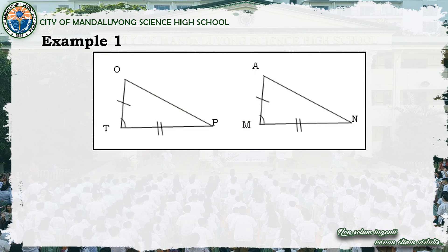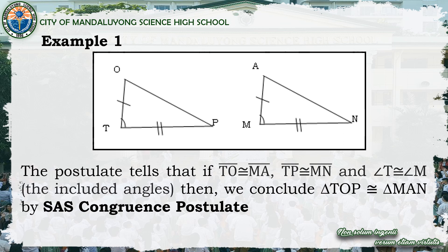Example number one: triangle TOP and triangle MAN. Based on the marks on the figure, if side TO is congruent to side MA, side TP is congruent to side MN, and angle T is congruent to angle M — which are the included angles — then we conclude that triangle TOP is congruent to triangle MAN by SAS congruence postulate. Angle T is the included angle between sides TO and TP; angle M is the included angle between sides MA and MN.